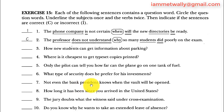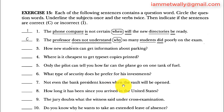Sentence 7: 'Not even the bank president knows when the vault will be opened.' 'The bank president' is the subject, 'knows' is the verb. 'When' is a connector and it should be followed by a subject — 'the vault' is the subject, 'will be' is the verb. It is just a connective word; the sentence is correct.